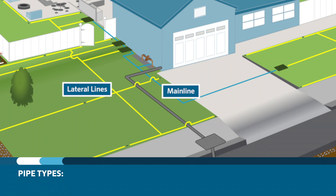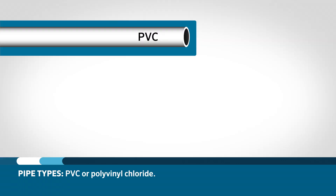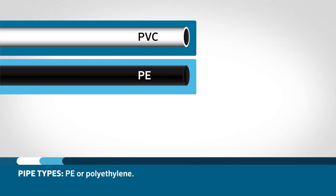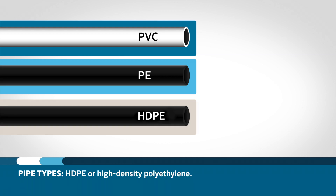There are three main types of pipe that will be used in an irrigation system for both laterals and the mainline: PVC or polyvinyl chloride, PE or polyethylene, and HDPE or high density polyethylene.